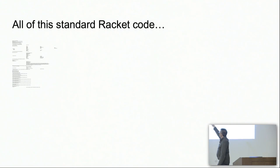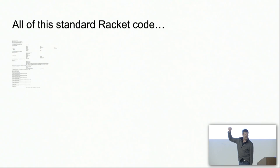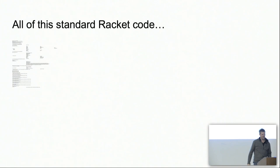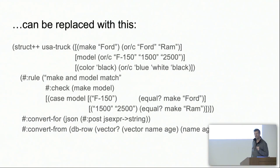Here's some standard Racket code that would do this for you. As you can see, this is doing some reflection code and then declaring various checks. You could do that, or you could do this — here is an example of an actual production-usable Struct++ declaration.